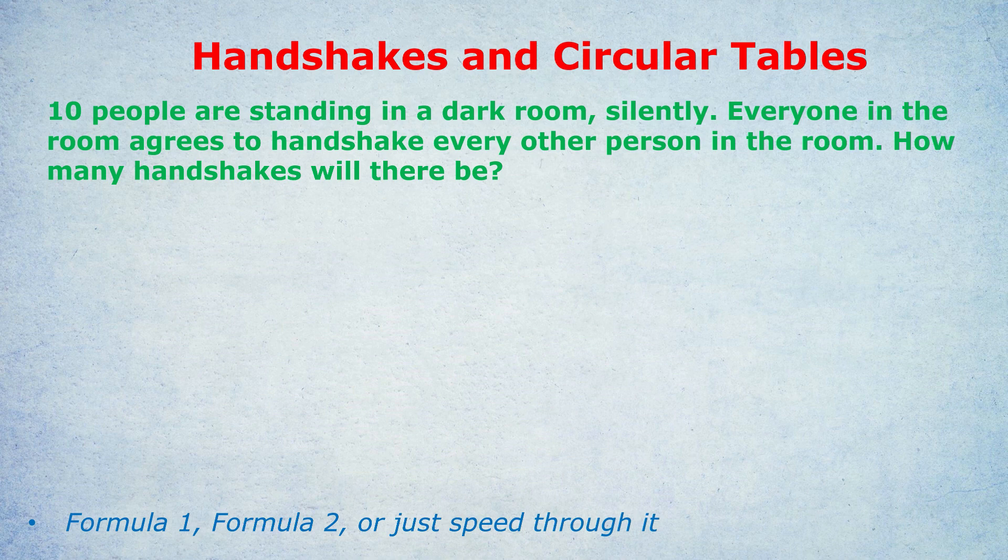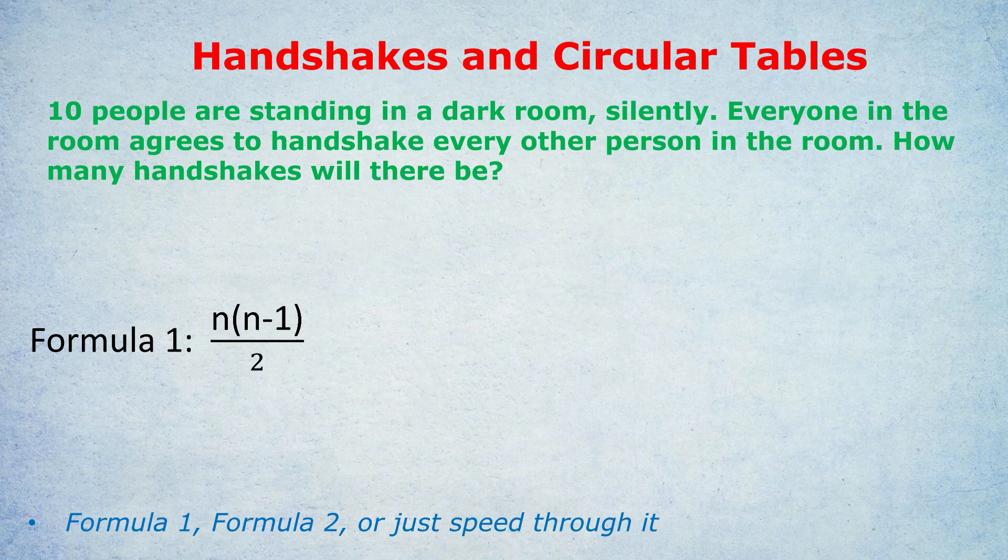Or we could use one of these two formulas. The formula n times n minus one over two is for those who really love formulas. This applies only to situations when each engagement involves two people: football matches, handshakes, etc. You simply do n times n minus one, in this case 10 times 9, divide by two. That will tell you how many handshakes there will be in total.